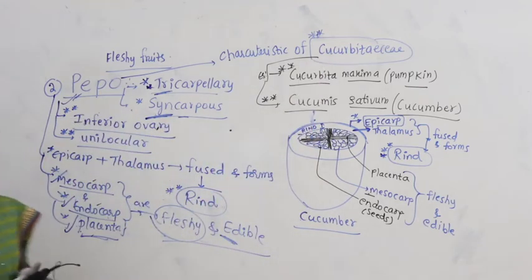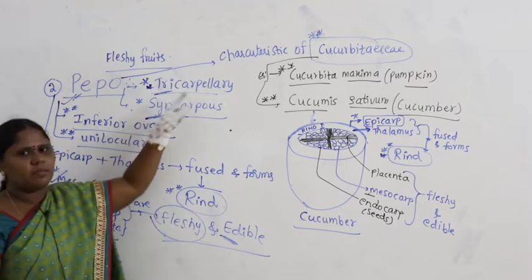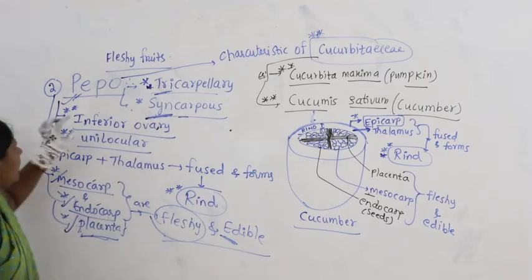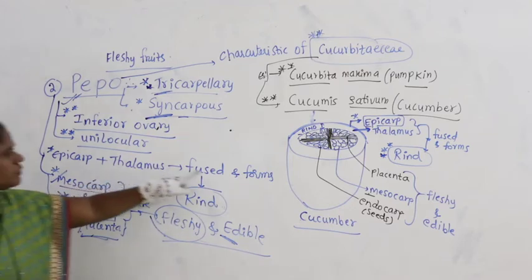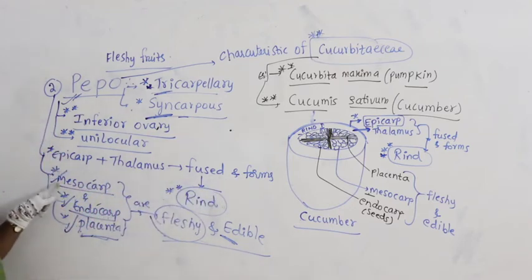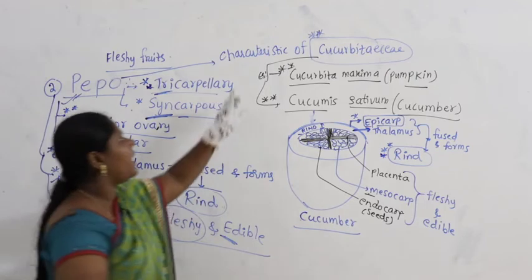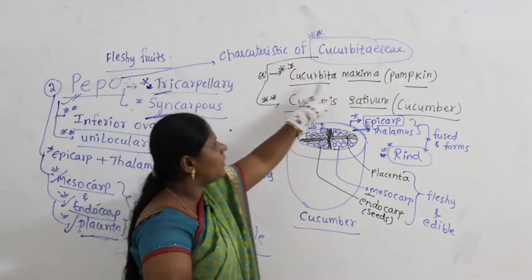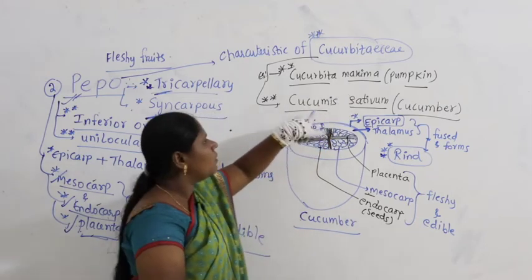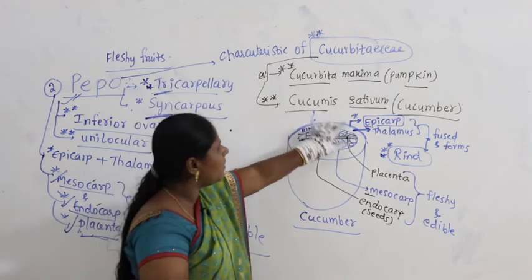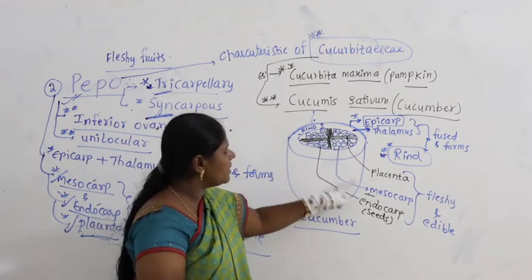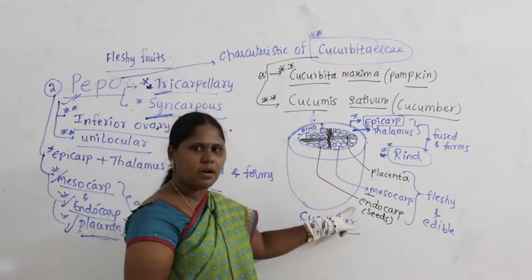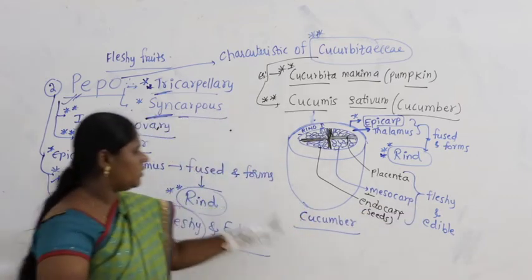To summarise pepo: tricarpellary meaning three carpels, syncarpus meaning carpels are fused, inferior ovary, unilocular meaning only one chamber. Epicarp and thalamus fused to form the rind. Mesocarp, endocarp, and placenta are fused, fleshy, and edible. Characteristic of family Cucurbitaceae. Examples: Cucurbita maxima — pumpkin, Cucumis sativus — cucumber.